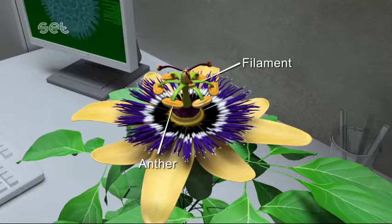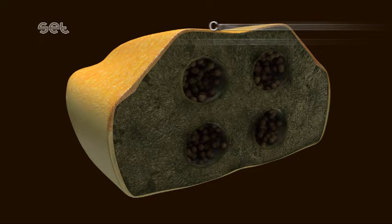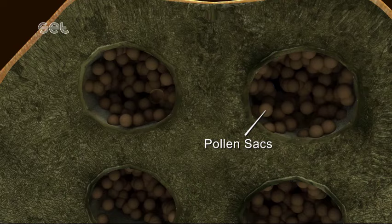Angiosperms have male organs consisting of two parts: anther and filament. The cross section of the anther displays four obvious compartments. Each compartment contains pollen sacs.